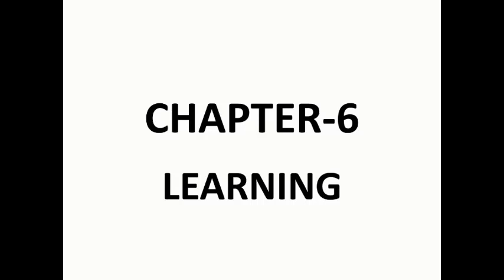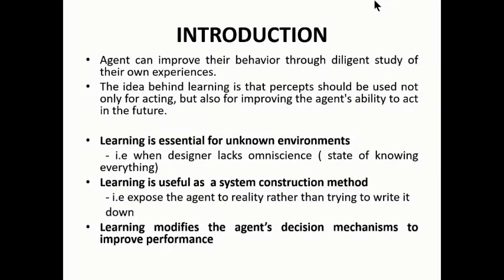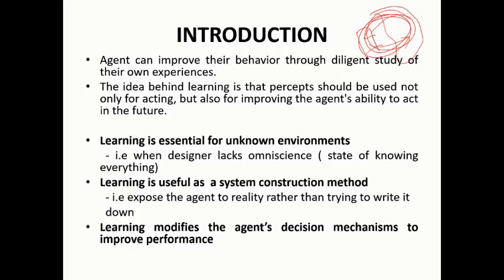In this chapter we will study some strategies for learning related to artificial intelligence. An agent can improve their behavior through diligent study of their own experience. This is really true because the agent interacts with the environment continuously — it first gets sensations and then performs actions. This is a continuous process, and by doing so it learns a lot of things about the environment.